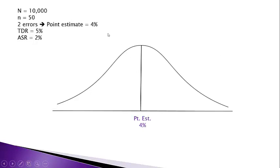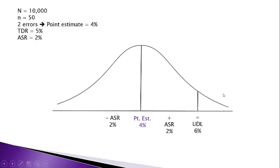We place the 4% point estimate right in the middle of the distribution and give ourselves a 2% cushion, plus or minus — that's the allowance for sampling risk. If I add 2% to the 4%, I get the upper deviation limit. That upper deviation limit is 6%. The point estimate plus the allowance for sampling risk gives me the upper deviation limit.